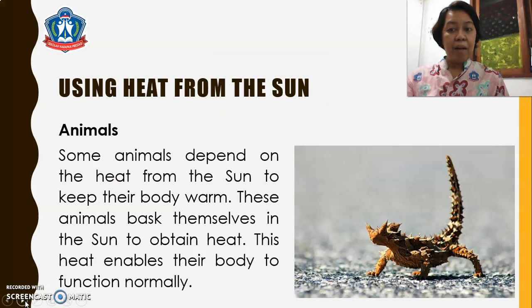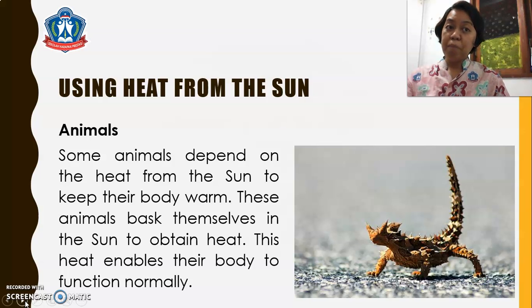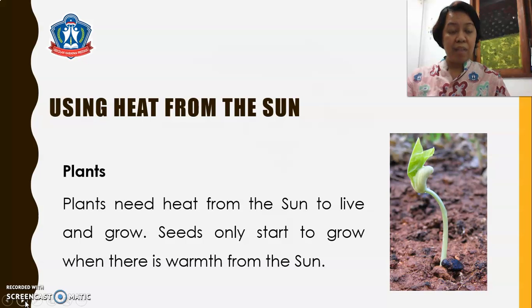For animals, some animals depend on the heat from the sun to keep their body warm. These animals bask themselves in the sun to obtain heat. This heat enables their body to function normally. Plants need heat from the sun to live and grow. Seeds only start to grow when there is warmth from the sun.